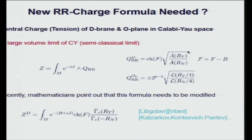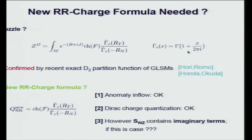However, as I mentioned earlier, several mathematicians, including this gentleman, recently argued that the central charge formula of the D-brane in the large volume limit is incorrect. The new expression they proposed involves a new characteristic class called the Gamma class, rather than the A-roof genus, where the Gamma class is defined using the Euler Gamma function. Recently, a Japanese group confirmed this new expression is indeed correct by computing the exact hemisphere partition function of the gauge linear sigma model.